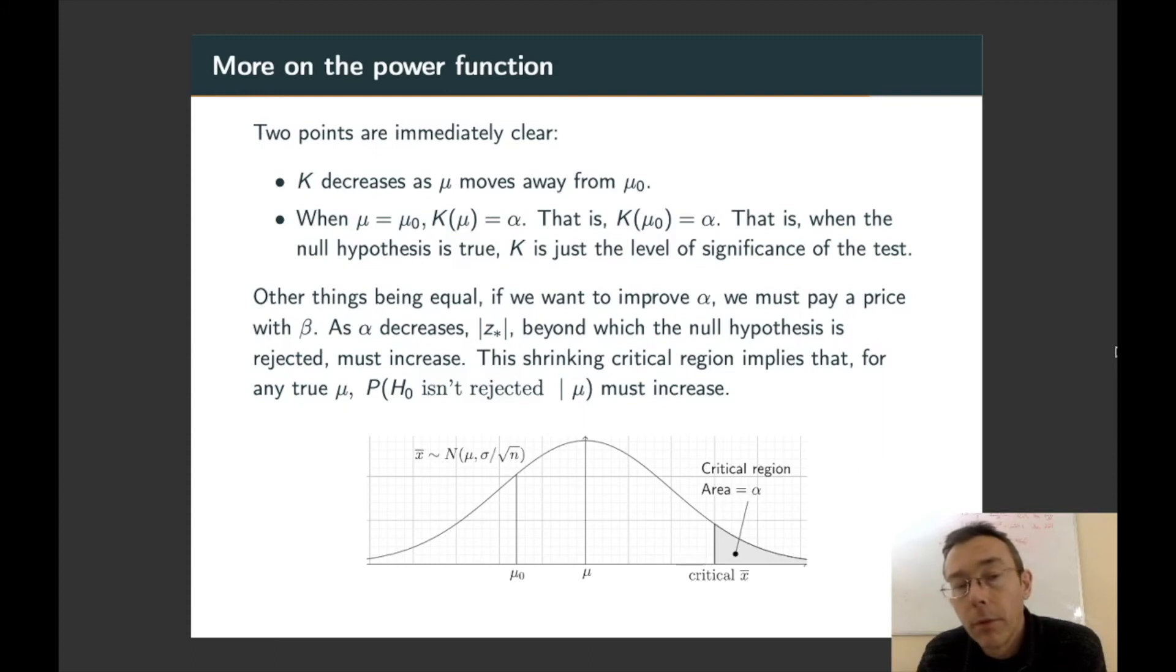So these first two bullet points summarize the two points I made in the GeoGebra demonstration. K decreases as mu moves away from mu-naught in the direction of the test. And when the true population mean coincides with the null hypothesis population mean, then K is just going to be the significance level of the test.